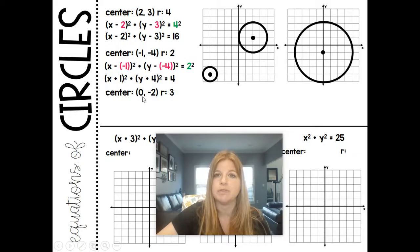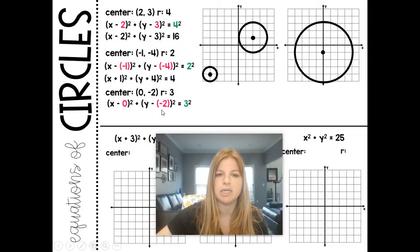Last one, if you have a value of 0, when you do x minus 0, it's just simply x. So you don't need to put any of that in. And then if it's y minus that negative 2, we know that same thing here. If it was y minus that negative 4, and it became y plus 4, the same situation is here. If it's y minus negative 2, then it's y plus 2, and then 3 squared is 9.